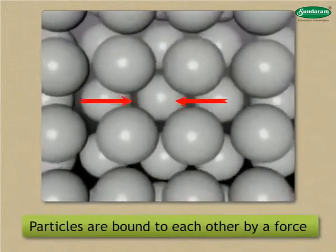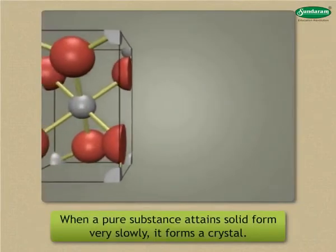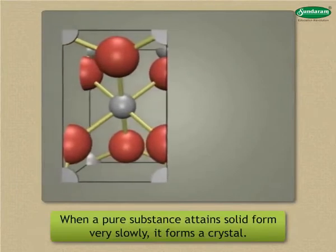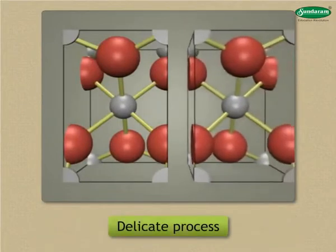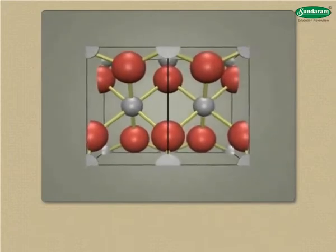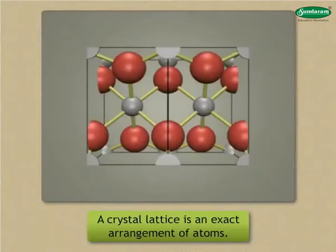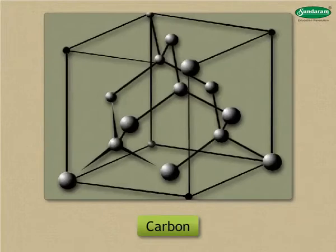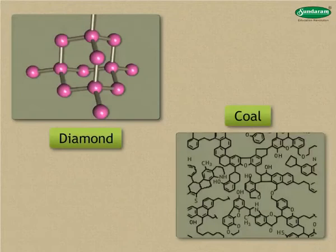The particles in a solid are bound to each other by a force. When a pure substance attains solid form very slowly, it forms a crystal. Not all pure substances form crystals because it is a delicate process. The atoms in a crystal are arranged in a regular repeating pattern called a crystal lattice. A good example is carbon — when it forms a perfect crystal lattice, a diamond is formed, while in coal the arrangement of atoms is more random and different from diamond.